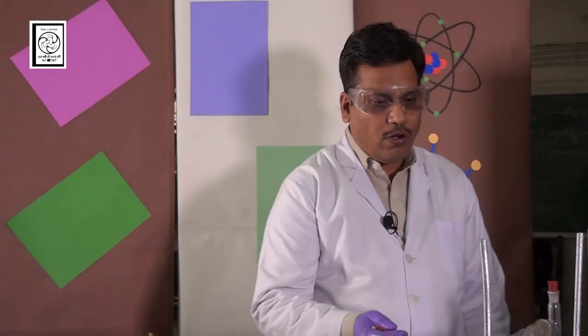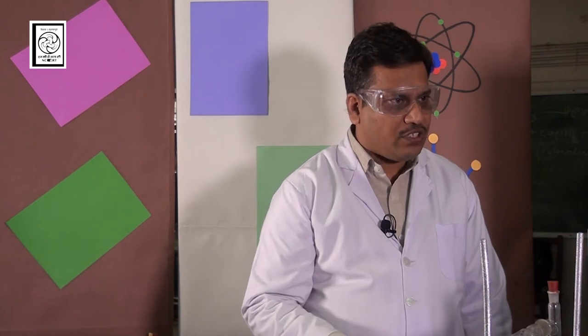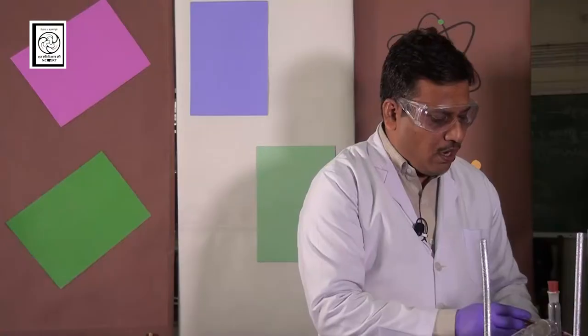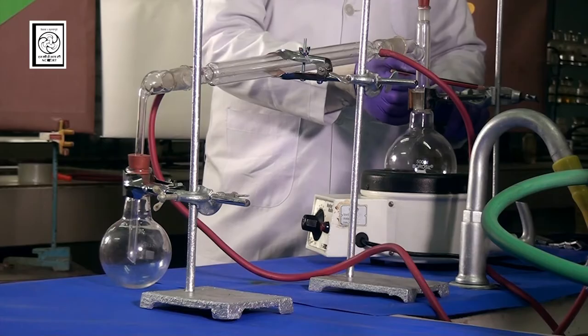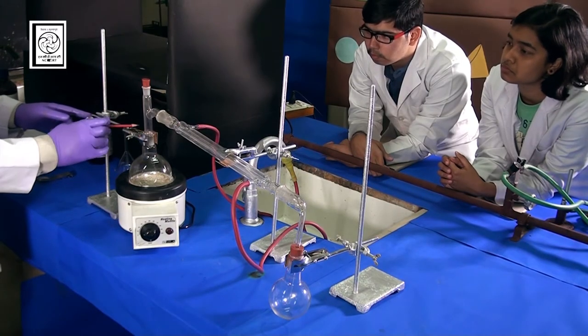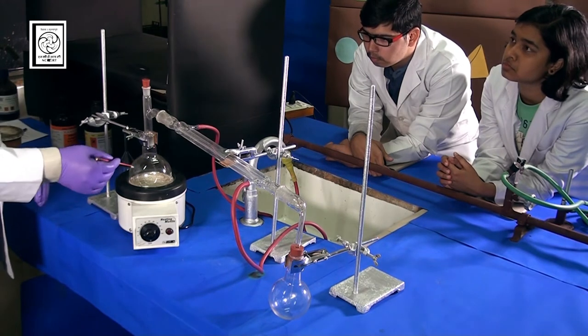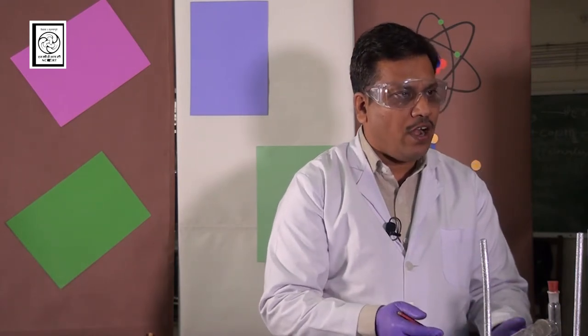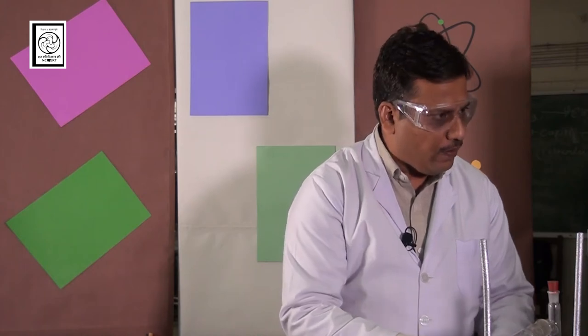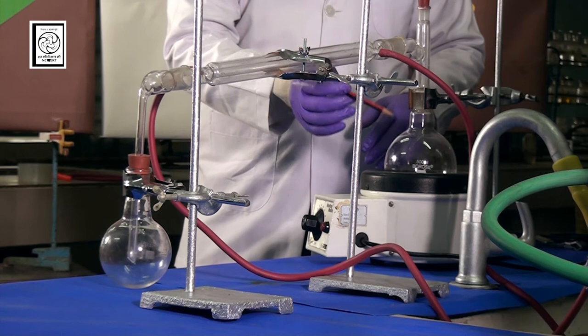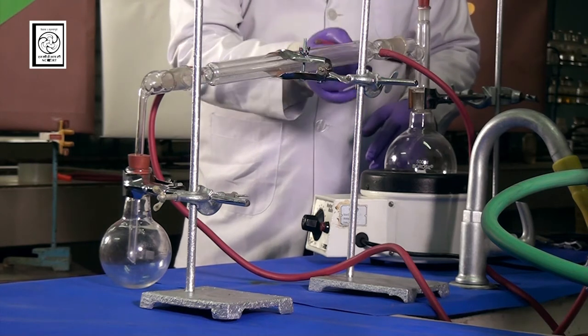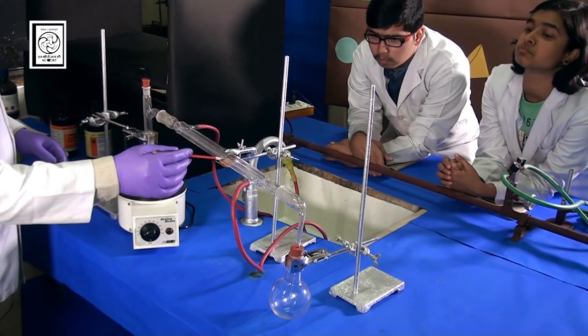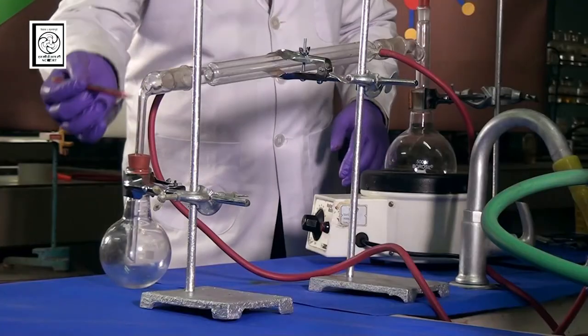So students, for understanding the process of simple distillation or to carry out the distillation process we need an assembly. This is a clamp stand. Now here this is clamp holder and this is hook clamp. A round bottom flask that is also called distilling flask. The capacity of distilling flask you can use around 100 to 500 ml. Here we have taken 500 ml round bottom flask. This round bottom flask or distilling flask is connected with a two-way adapter. This adapter connecting with Liebig condenser and this condenser again connected with receiving flask.